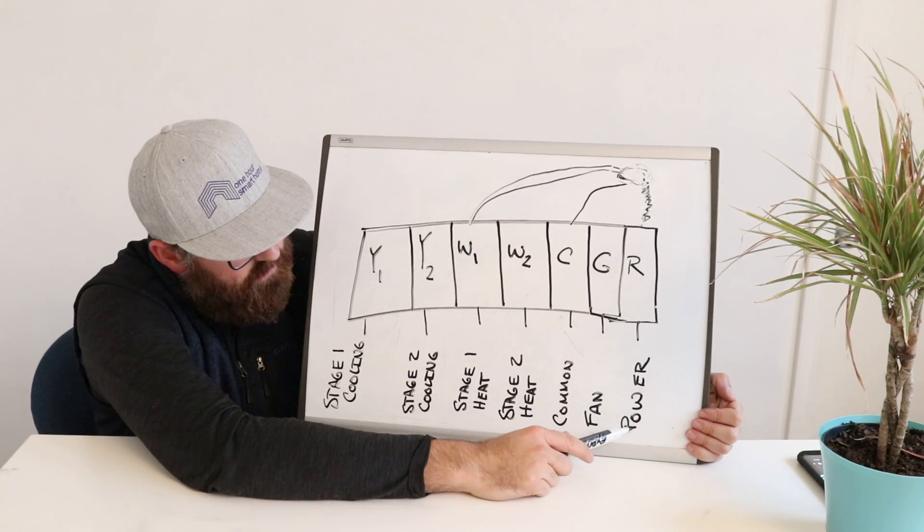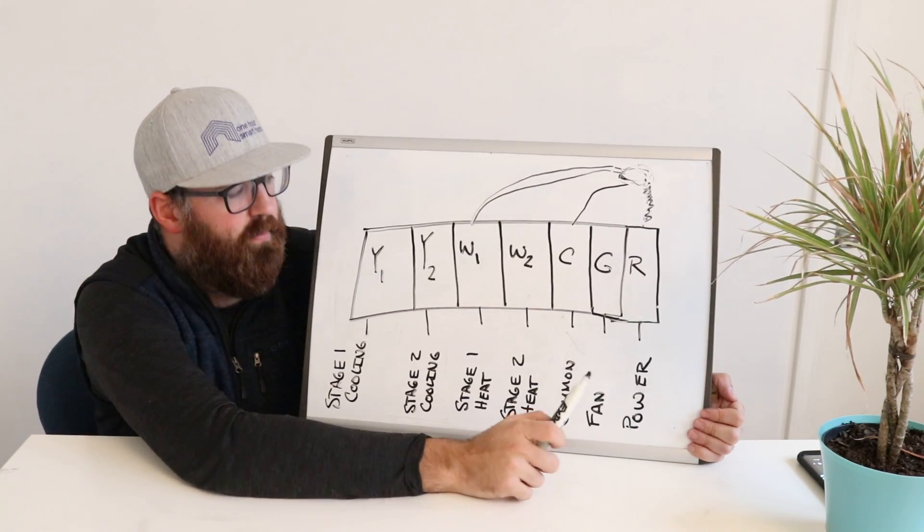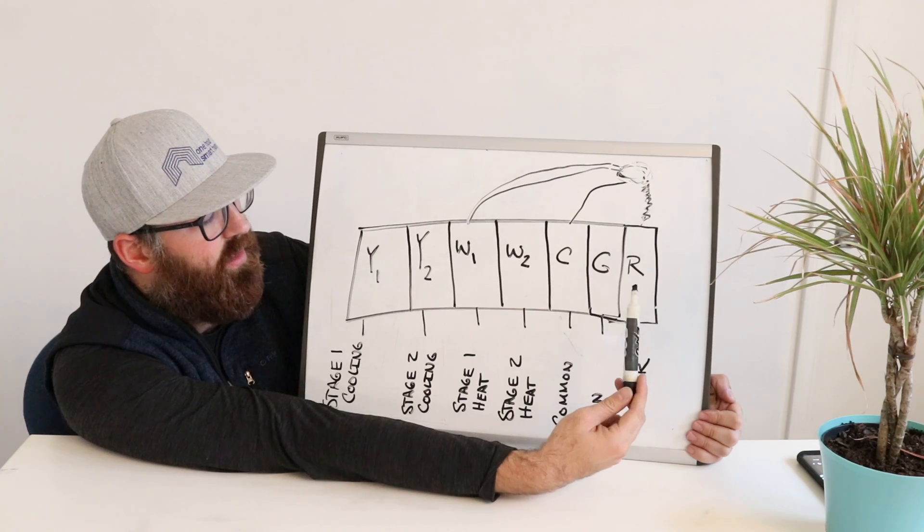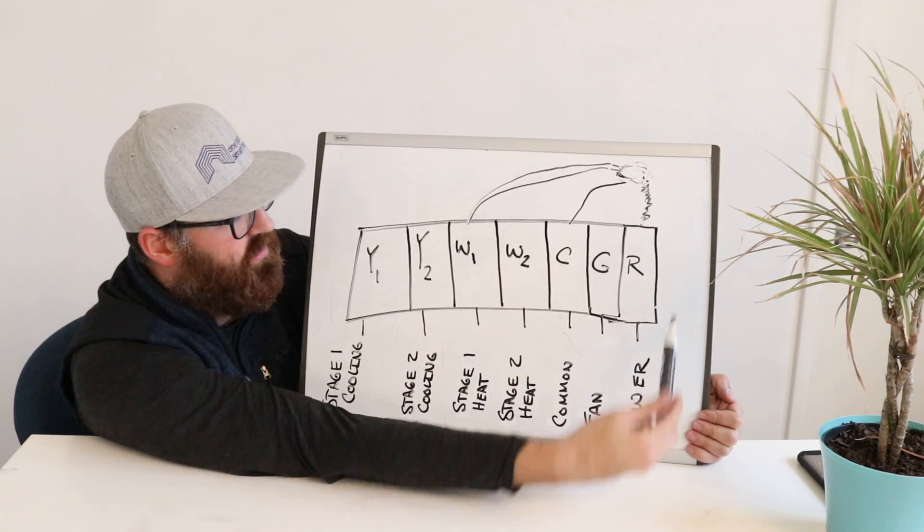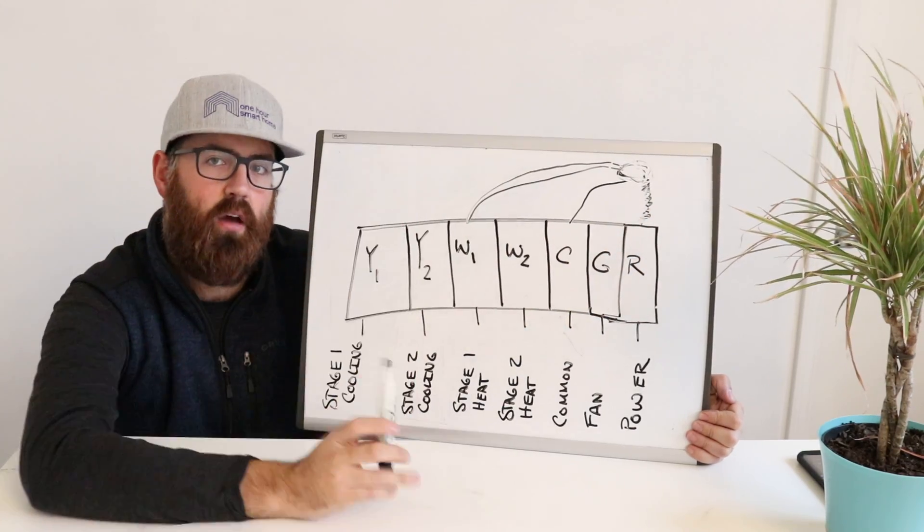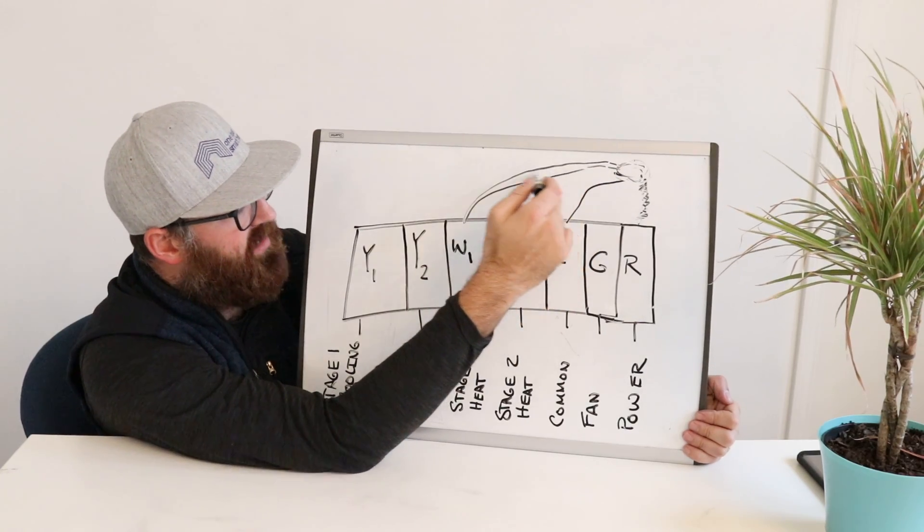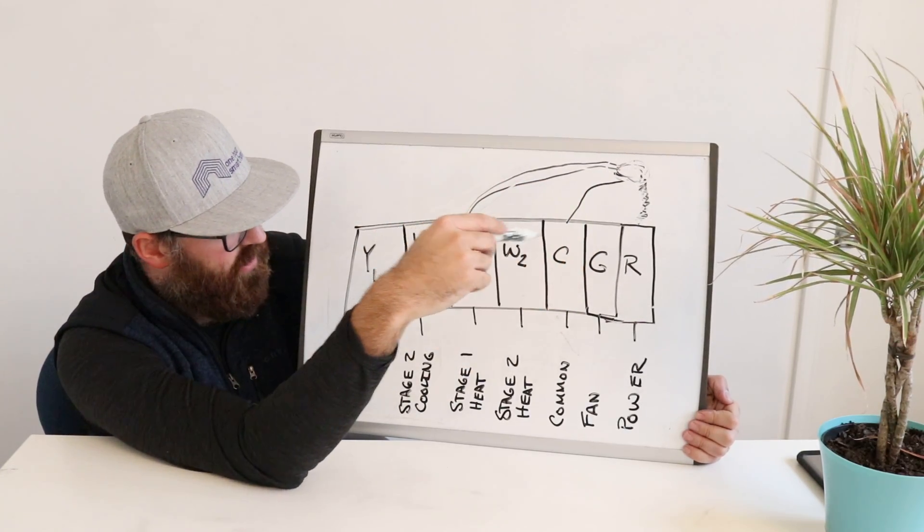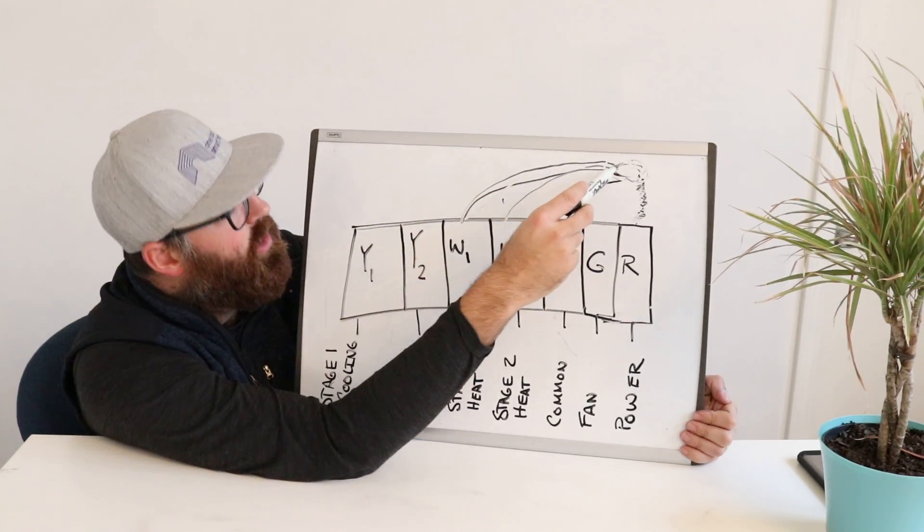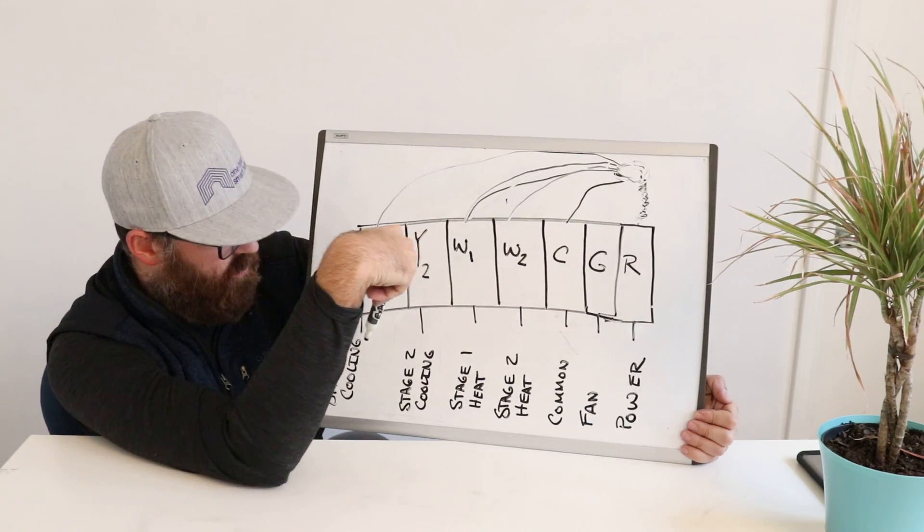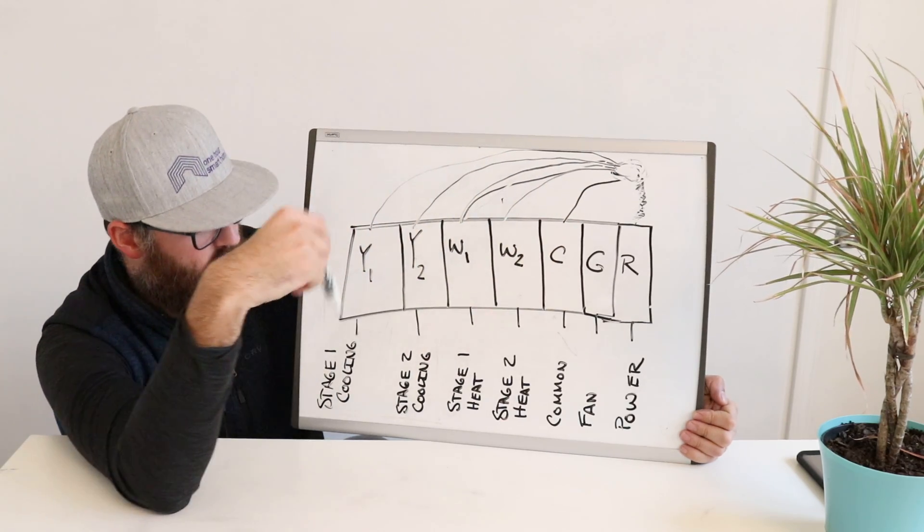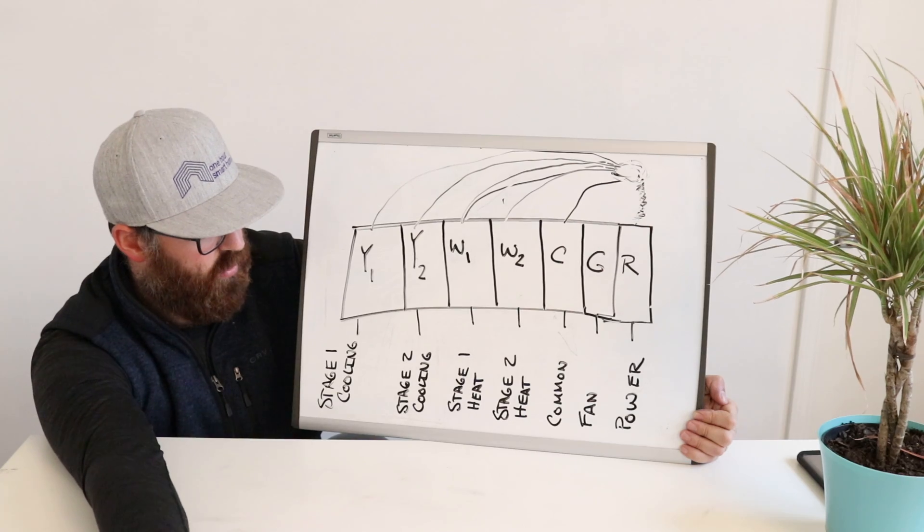Now last but not least, let's not forget the R wire, the power wire. This R terminal and wire inside the furnace is providing the power that is used to make any of these other connections. So power goes out from the R wire up to your thermostat, and depending on what you have your thermostat set to, will either then go back down to the W1 wire for stage one heat. If you want more heat, it'll go down to the W2 wire for stage two heat. If you want cooling, that power will go down to the Y1 wire and it will give you cooling. And if you want lots of cooling, it'll go down to the Y2 wire and give you the most cooling possible.